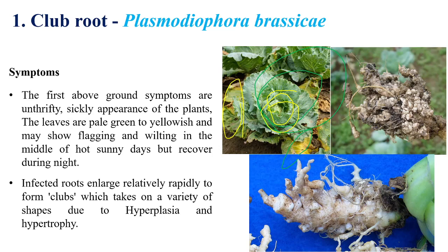The above-ground symptoms include yellowing of leaves, reduction in pod size, and a sickly appearance of the plant.